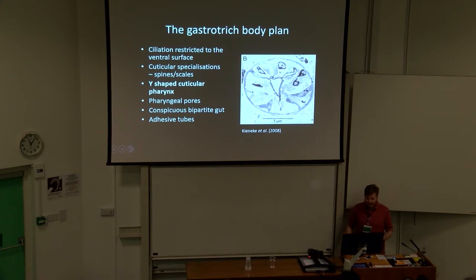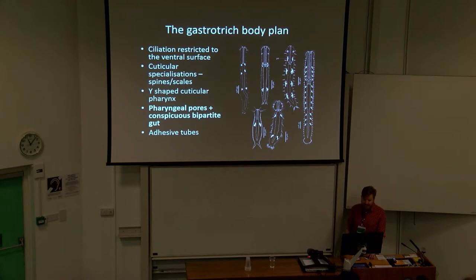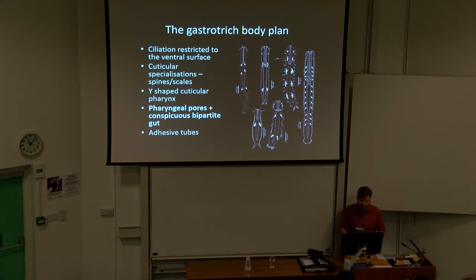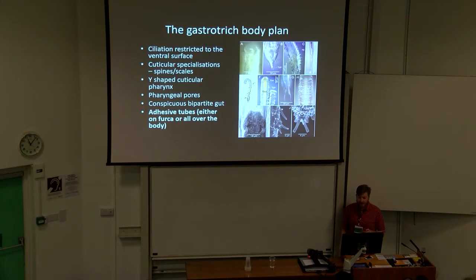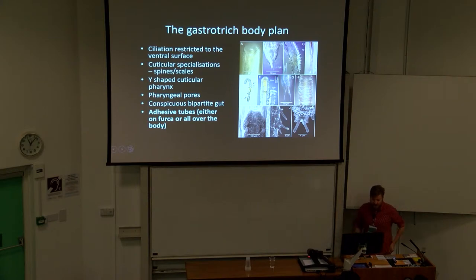One of their key features is that their pharynx is differentiated from their midgut. It has its own cuticle and this distinct Y-shaped lumen, and it's used for sucking in things like diatoms using suction feeding. Sometimes this pharynx has exhalant pores open to the environment that allow them to expel water and take in their food. They're also covered with adhesive tubes — an adaptation to living between sand grains — which allow them to stick onto sand grains as they locomote.